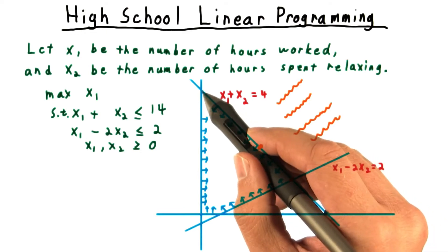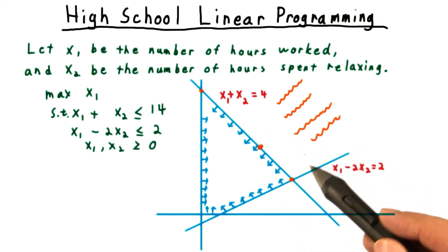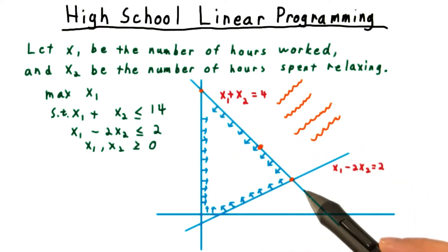But then, actually, both vertices on either side of this edge are optimal too. So if we just want an optimal solution, it always suffices to just look at the vertices.